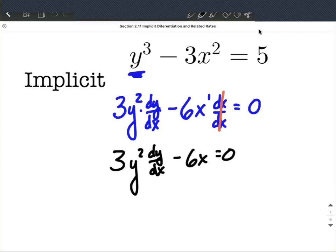Our goal, again, is to solve for the dy over dx. So to do that, let's move that 6x to the other side. So 3y squared dy/dx is going to equal 6x. Add to that to move it to the other side.